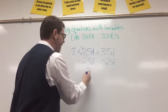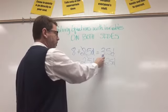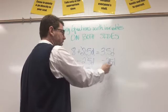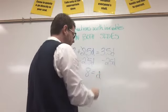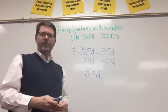This cancels out. So I'm left with 8 equals 3.5 minus 2.5 is 1. So 8 equals d. d equals 8. And there's my answer.